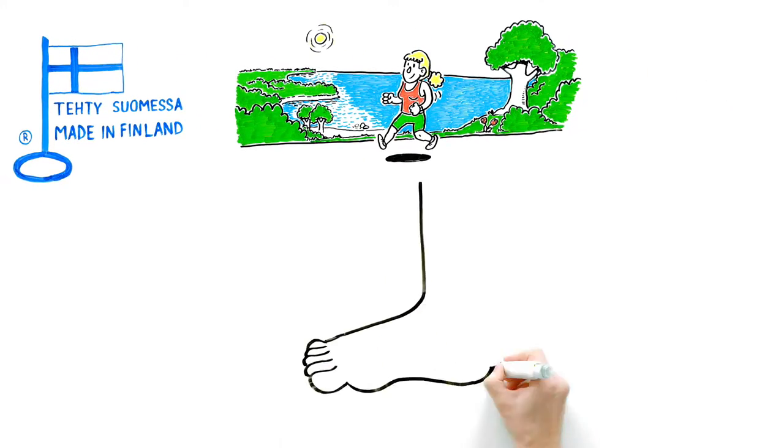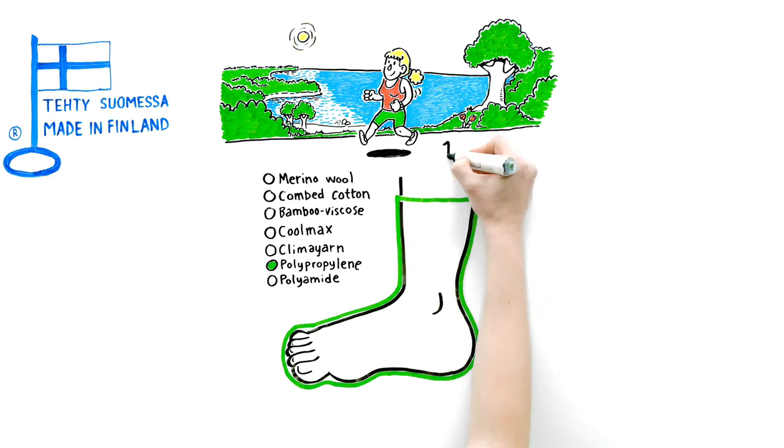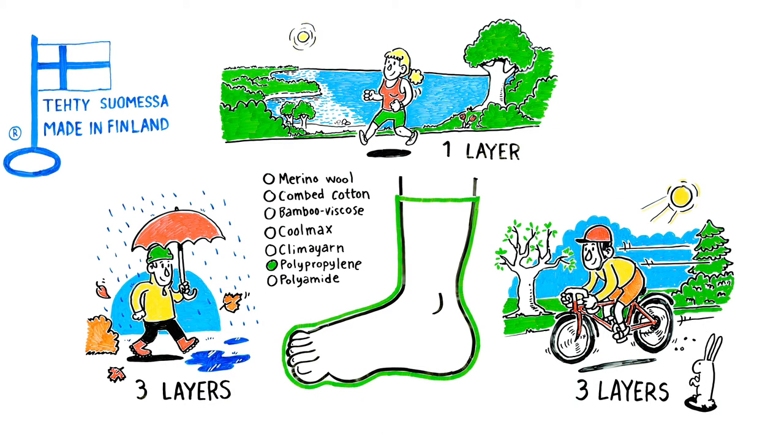In summer, it's enough for your sock to have one thin layer. In spring and autumn, you need three layers.